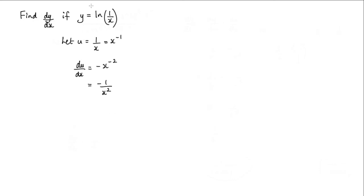Now going back to this original equation here, we have that y is equal to log of 1 over x, but we've substituted u for 1 over x. So now we have log of u. And dy by du, well, that is equal to 1 over u.